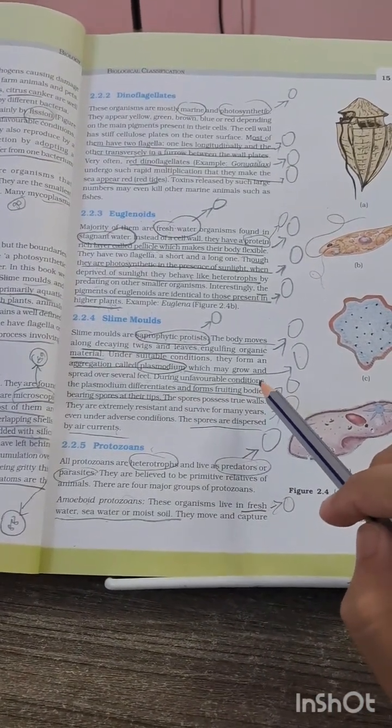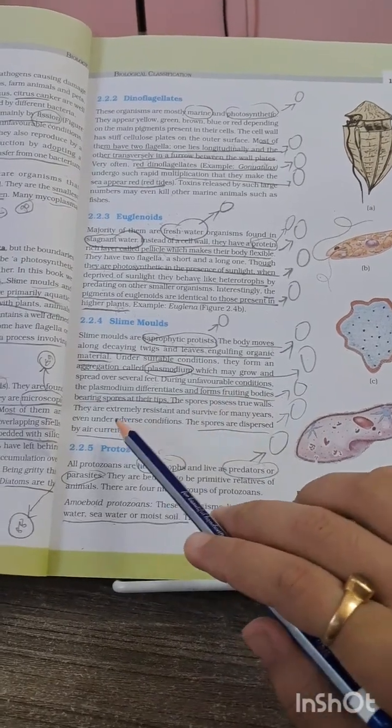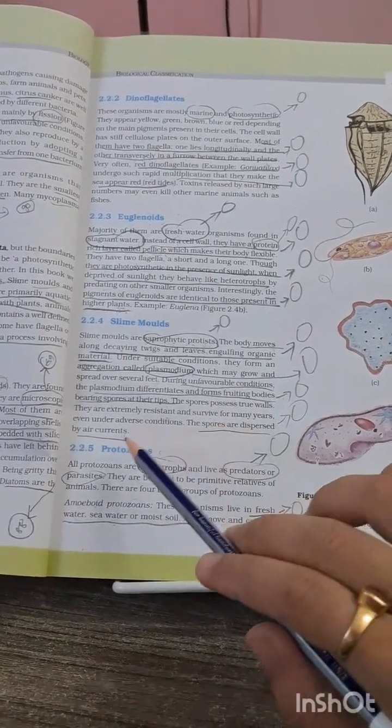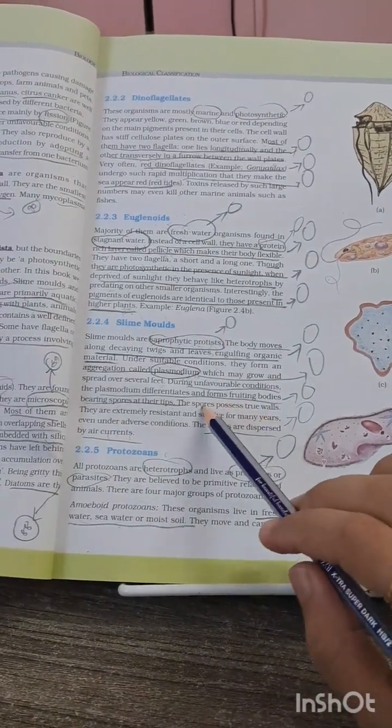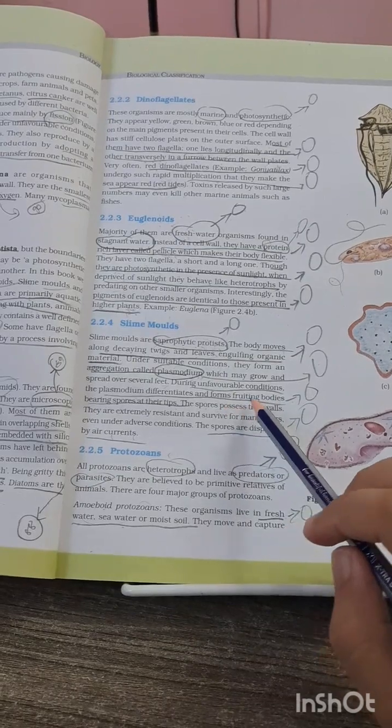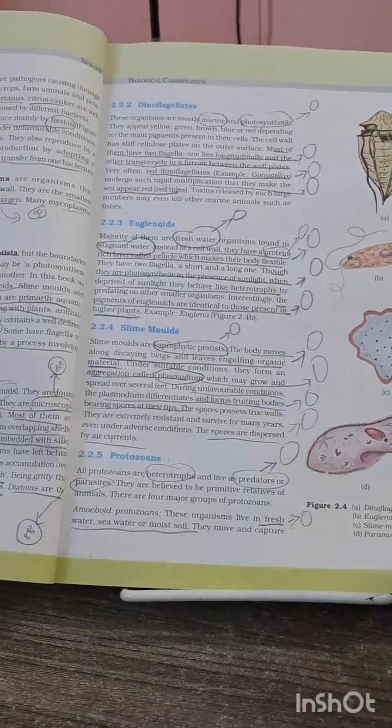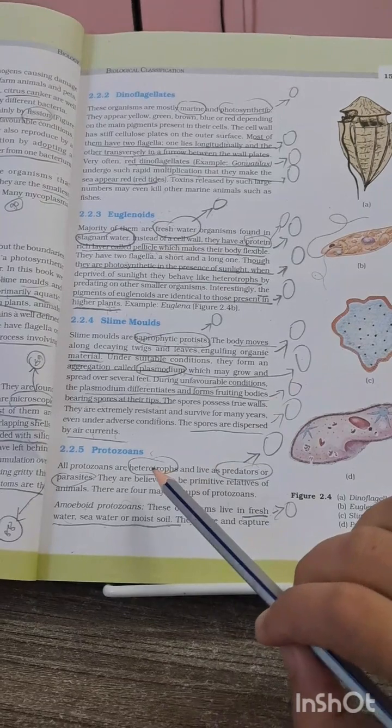Now these spores are dispersed by air currents. You have to also remember one thing, that plasmodium which forms fruiting bodies, these are extremely resistant. Now coming to the protozoans, about their food style, that is heterotrophs and they are the predator parasites.